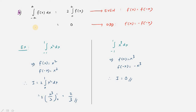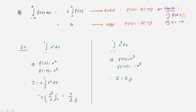This last property relates to the even-odd concept. If you have integral from −a to a of f(x) dx, it equals 2 times integral 0 to a of f(x) dx when the function is even — meaning f(x) equals f(−x). To check this, substitute x with −x in the function. If f(x) equals minus f(−x), it is an odd function and the integral equals zero.